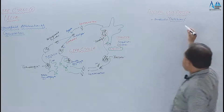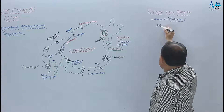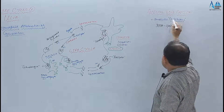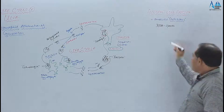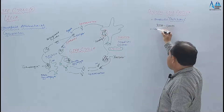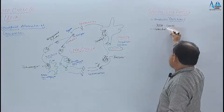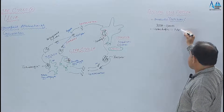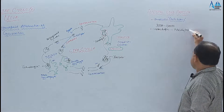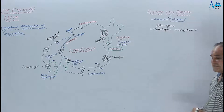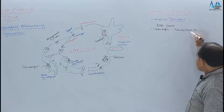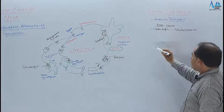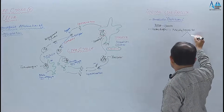Is group mein protista ko rakhte hain jismein near about 30,000 species hain. Yeh unicellular hain aur inke paas mostly animal-like characters hain. Sabse bada character yeh hai ke they are heterotrophs. Yad rakhna mostly parasites hote hain, aur mostly endo-parasites hote hain.